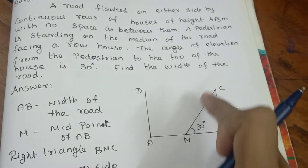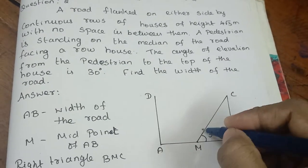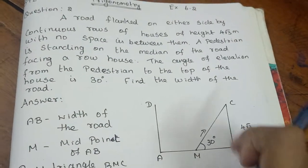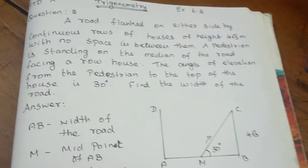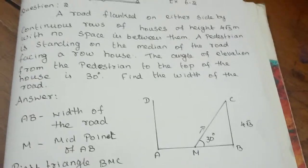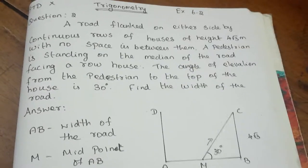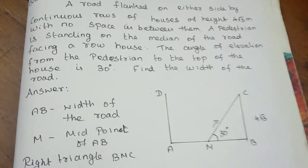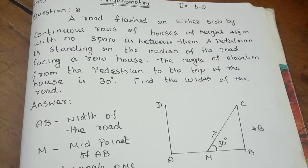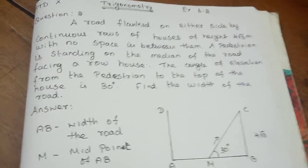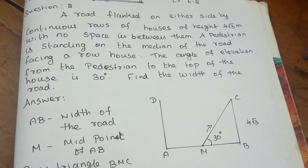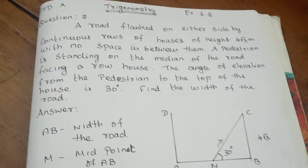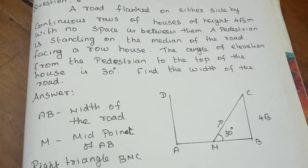At the bottom of the road, we see the angle of elevation. The angle of elevation is 30 degrees, and the height of the house is 4√3 meters. So this is the road, and the pedestrian is standing on the median of the road. We can see that there are two sides at the top of the road.